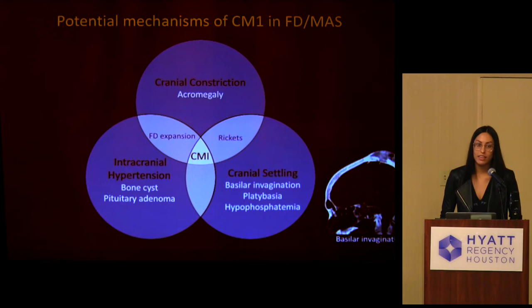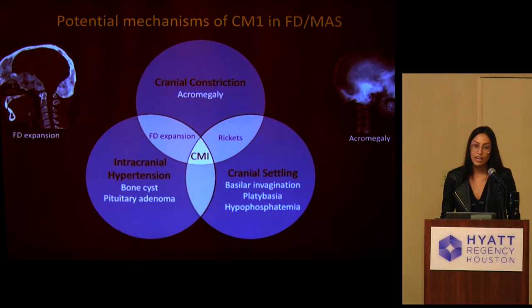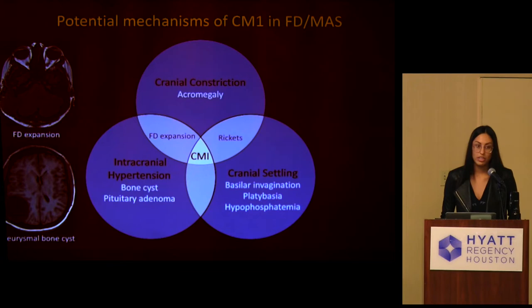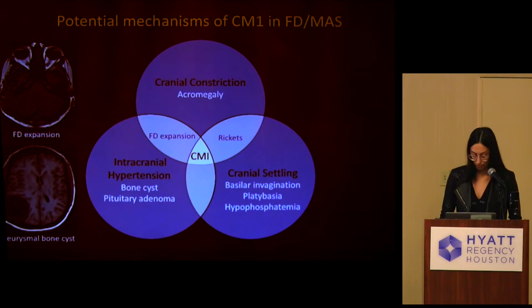In FD/MAS specifically, cranial settling can be worsened by the endocrinopathies associated with MAS — hypophosphatemia, rickets, and even hyperthyroidism. Cranial constriction could be due to widespread FD expansion of the craniofacial region, also worsened by acromegaly or growth hormone excess observed in this disease. Finally, discrete mass lesions including aggressive localized FD expansion or aneurysmal bone cysts can also play a role.